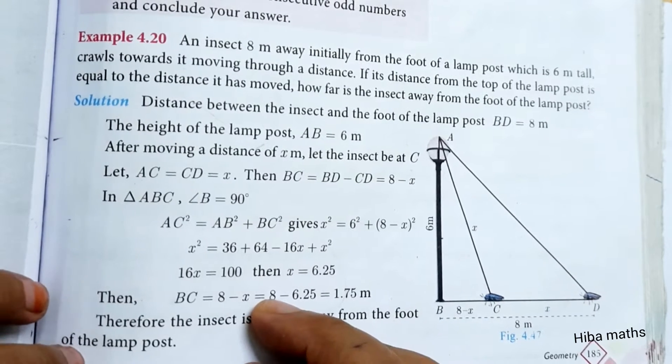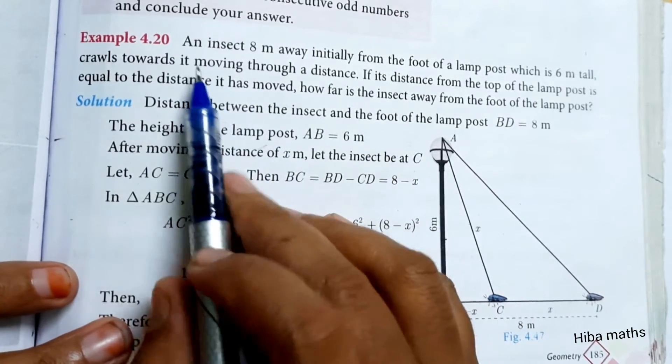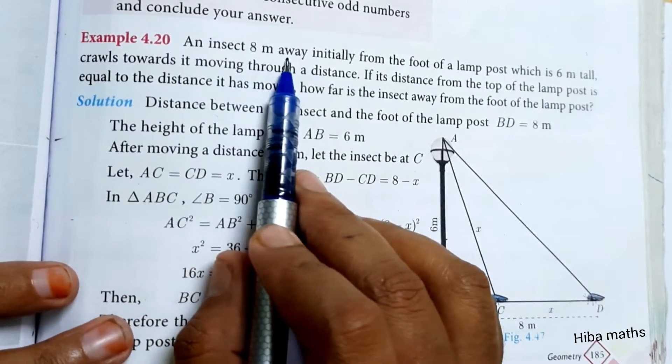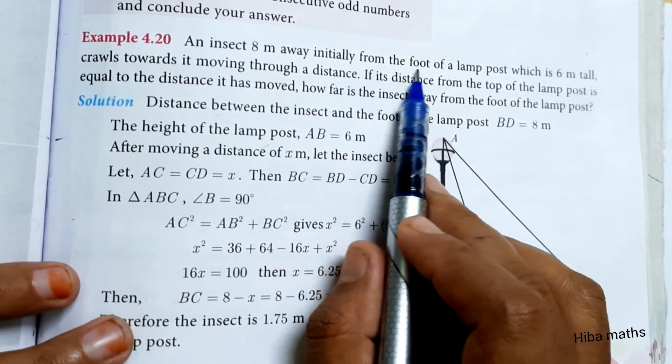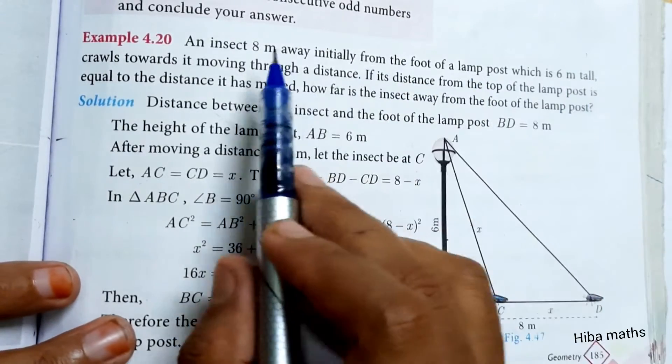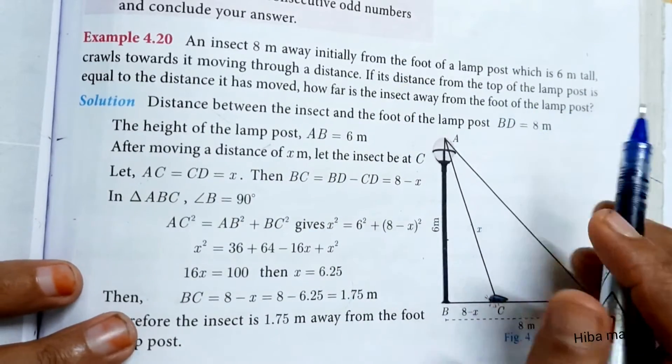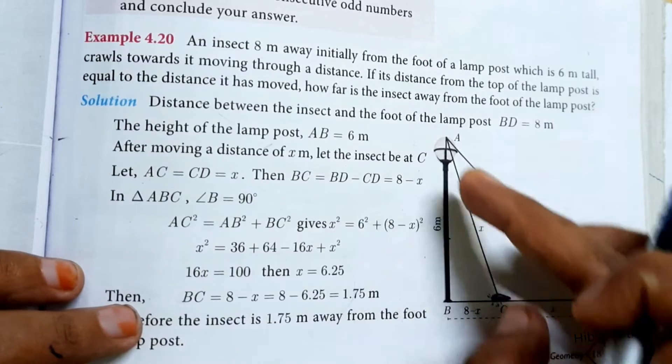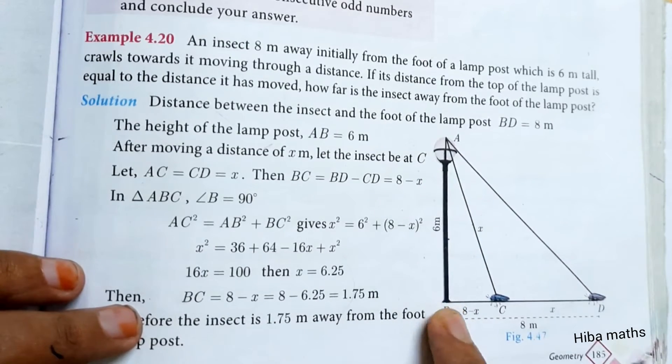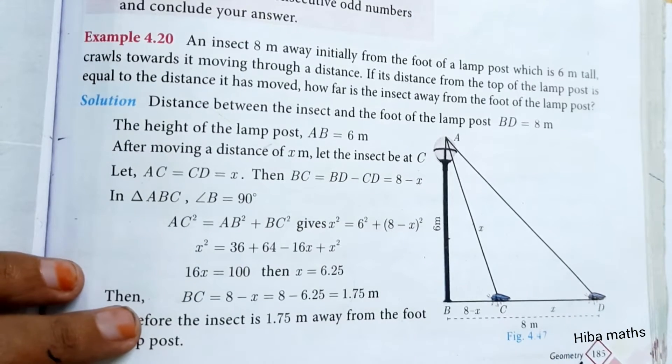Hello Students, welcome to Hiba Maths. 10th Standard Maths Chapter 4 Example 4.20: An insect 8 meters away initially from the foot of the lamppost which is 6 meters tall. So there is an insect and a lamppost. The lamppost is 6 meters tall. Let's look at the diagram.